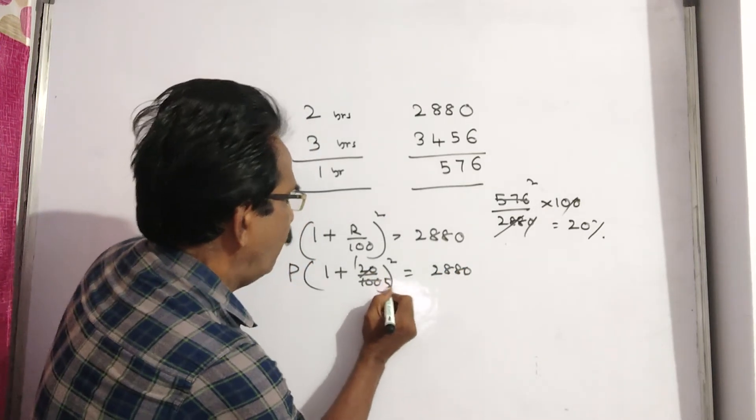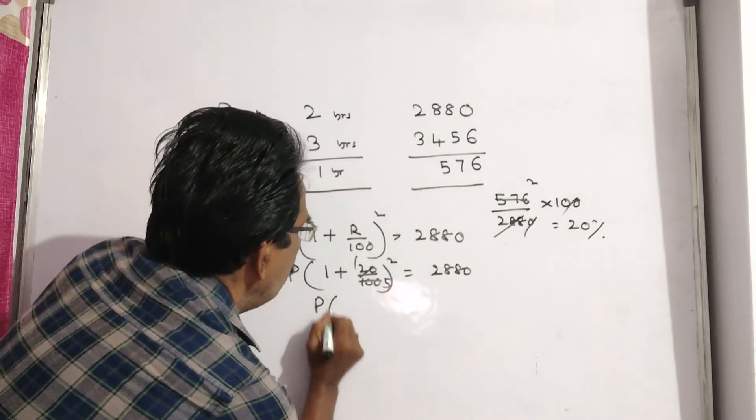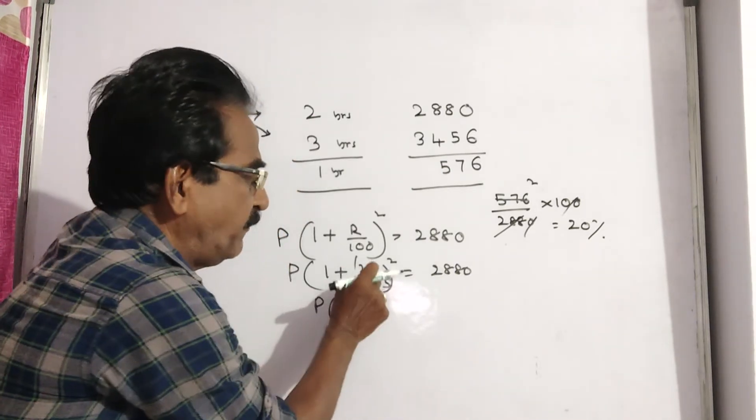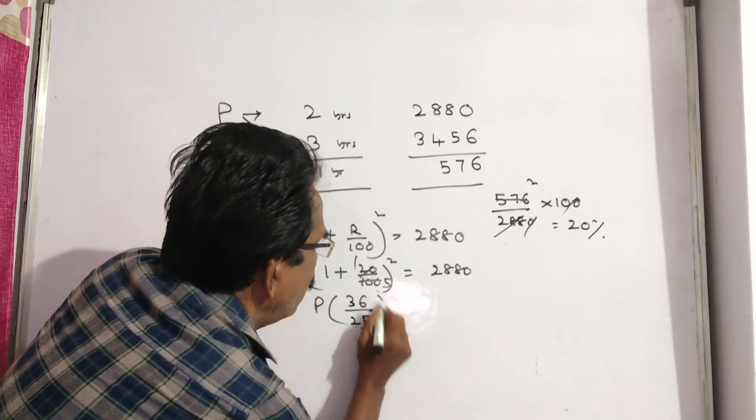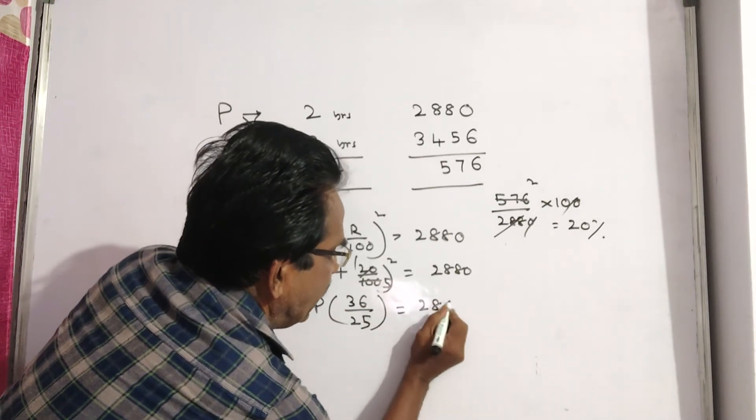21's, 25's. P into 1 plus 1 by 5 means 6 by 5. That is 36 by 25. This is equal to 2880.